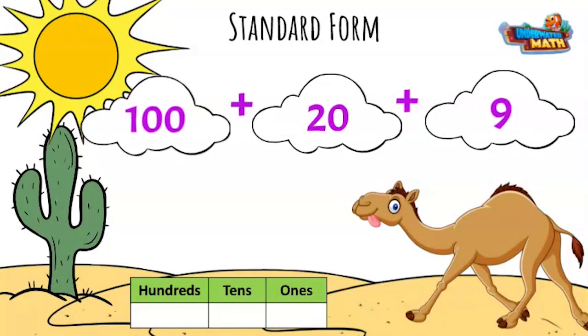I'm going to use the place value chart again. How many hundreds do we have? Well, there is one. There are two tens and nine ones. I look at my place value chart and see the number 129.